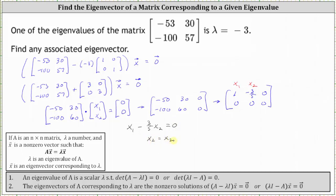Let's parameterize the solution by letting x2 equal t. So if x2 is equal to t, we have x1 equals three-fifths t. Now remember, an eigenvector can't be the zero vector, so we should make a note here that t can't equal zero.